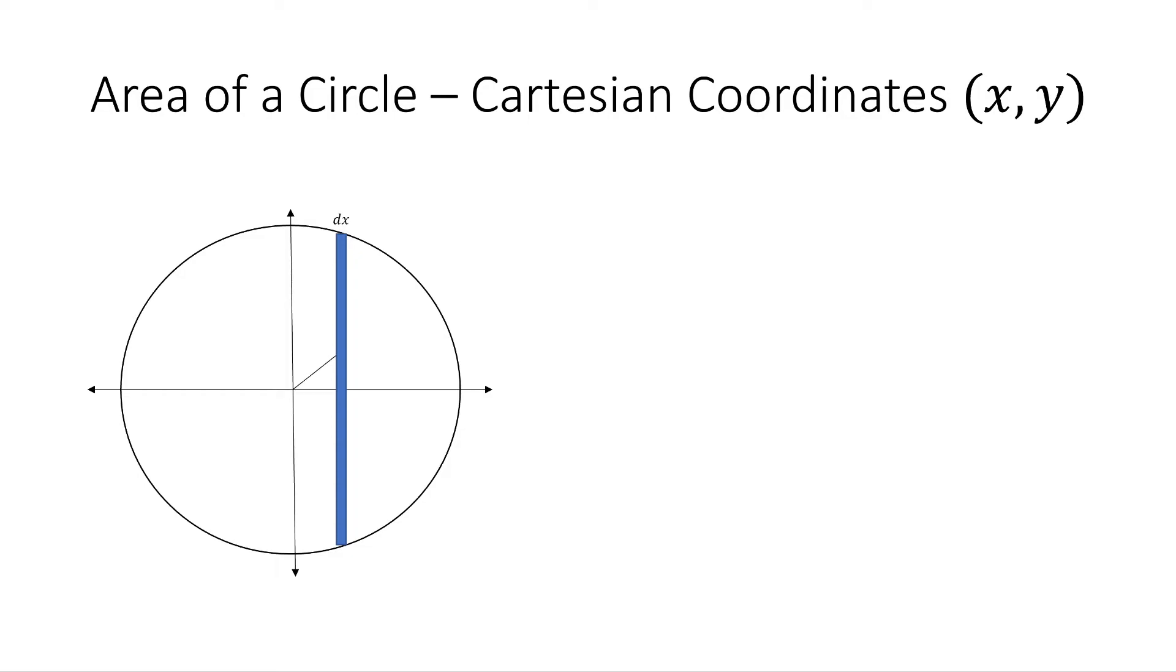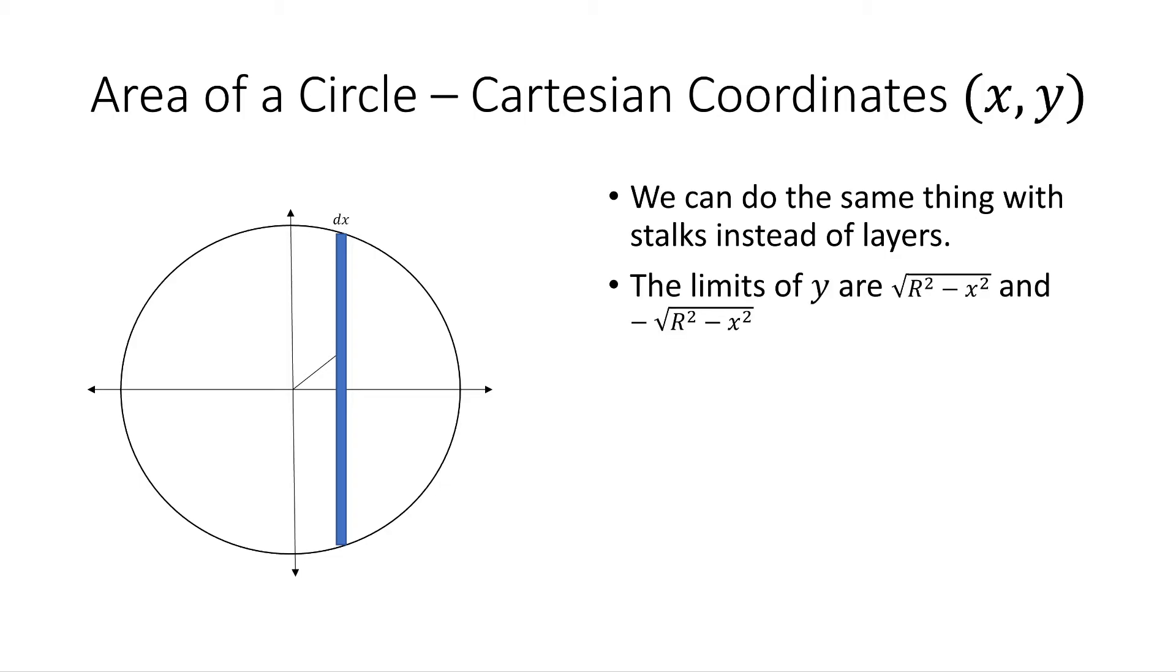So if we wanted to do that with the stalks, it's a little bit different. Now we're summing up y first instead of x. So then there's limits on y that are dependent upon the x value you choose. Because if you choose a different x value, you're going to get a different length for y.